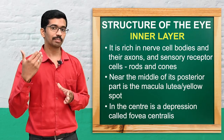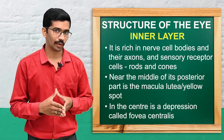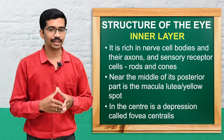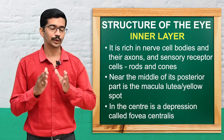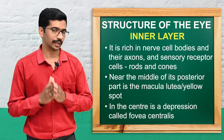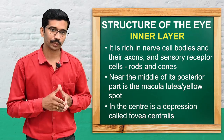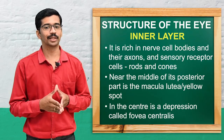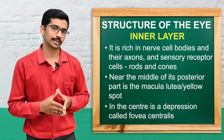On the posterior side of the eyeball, near the posterior middle, there is a part called the yellow spot or macula lutea. Within the yellow spot there is a depression termed the fovea centralis.